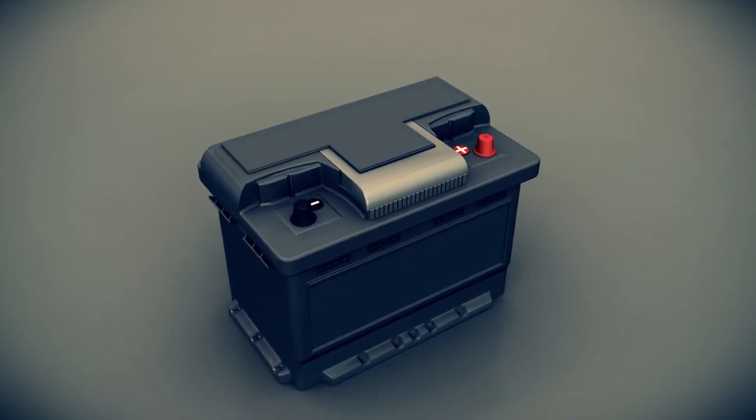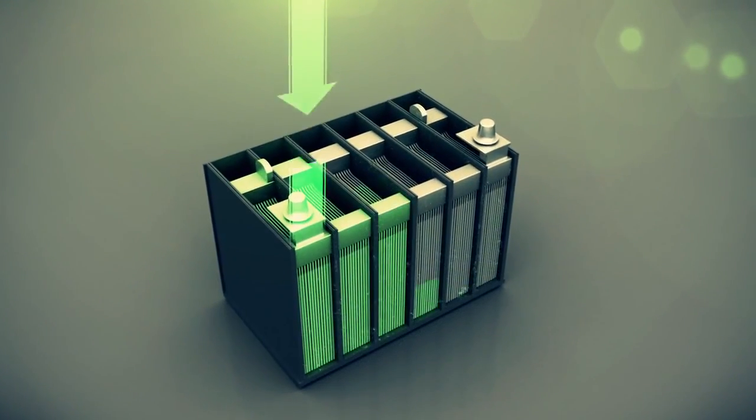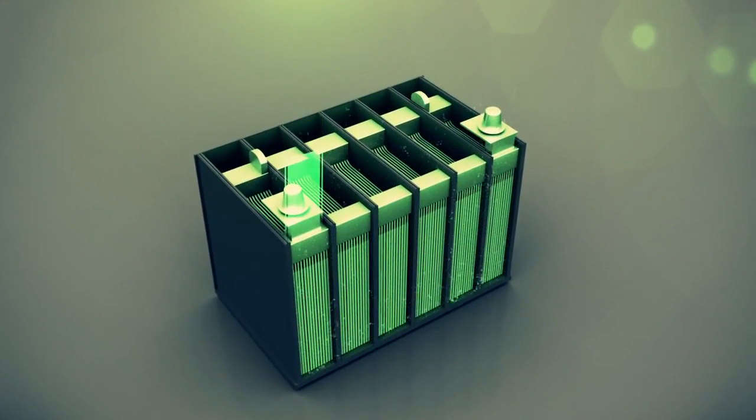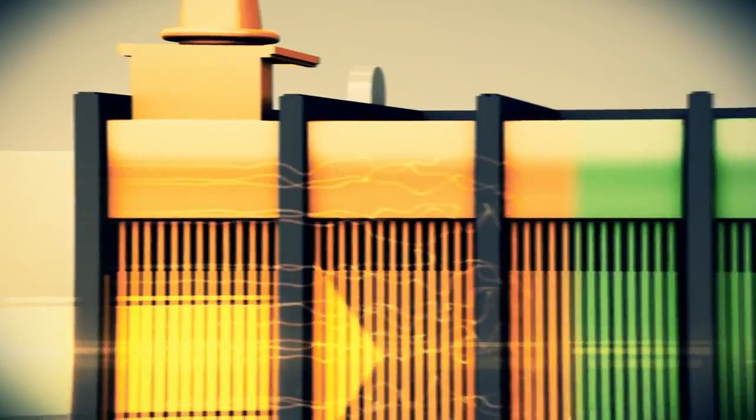First, desulfation breaks down and removes the build-up of sulfate. Soft start then tests and checks the vitals of your battery before the bulk charging phase begins.